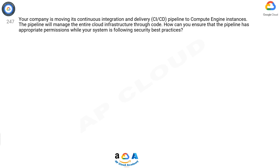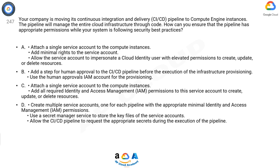Question 247: Your company is moving its continuous integration and delivery (CI/CD) pipeline to Compute Engine instances. The pipeline will manage the entire cloud infrastructure through code. How can you ensure that the pipeline has appropriate permissions while following security best practices? Option A: Attach a single service account to the compute instances, add minimal rights to the service account, and allow the service account to impersonate a Cloud Identity user with elevated permissions to create, update, or delete resources.